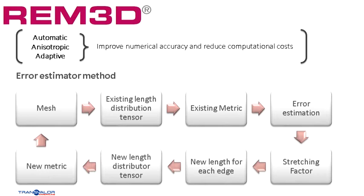The adaptive feature is crucial, because it enables REM3D to make sure that the solver captures all the phenomena occurring during the injection process, or the expansion for the foams. The solver adapts the mesh to the complexity of the cavity, and also to local velocity gradients. We will see more details in the next slides.